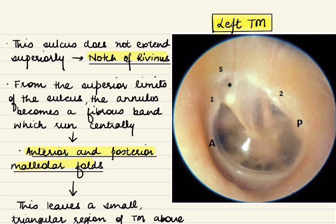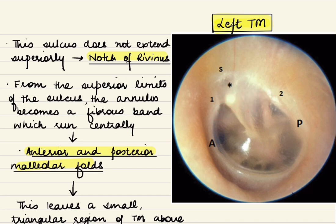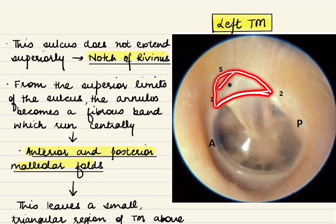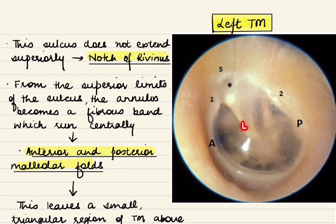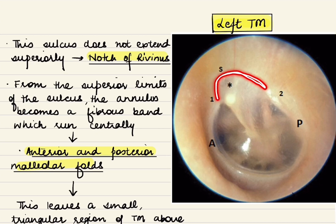From the superior limits of the sulcus, the annulus becomes a fibrous band which attaches to the lateral process of the malleus, forming the anterior malleolar fold and the posterior malleolar fold. These malleolar folds divide the tympanic membrane into two parts: an upper triangular shaped area known as the pars flaccida or Shrapnell's membrane, and a larger inferior part known as pars tensa. As seen in the diagram, Shrapnell's membrane does not have an annulus around it.